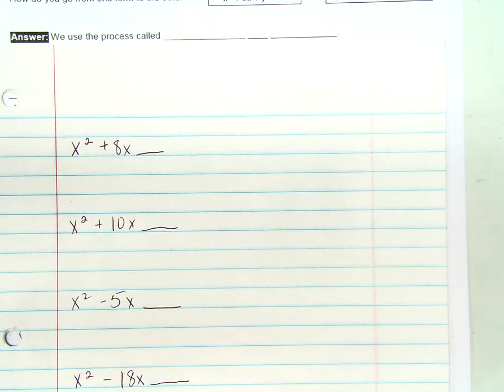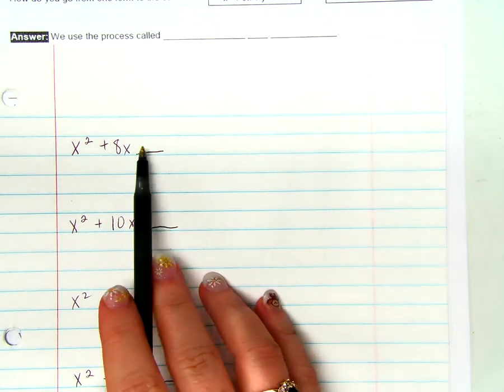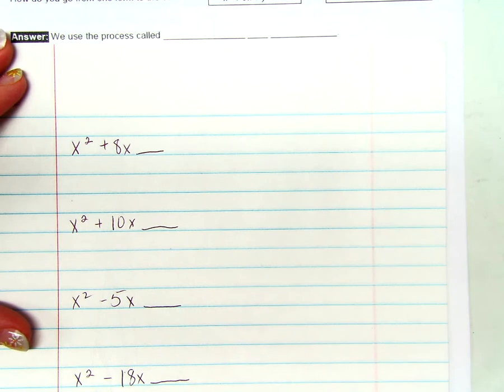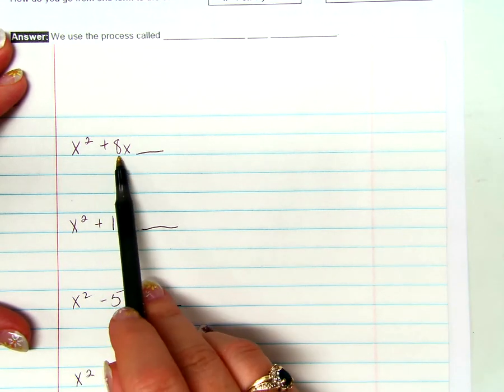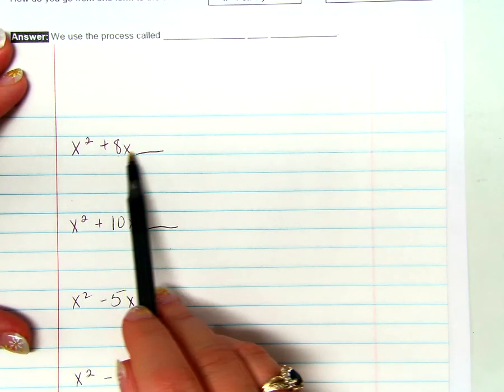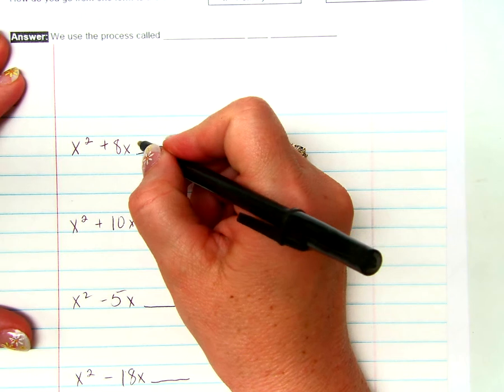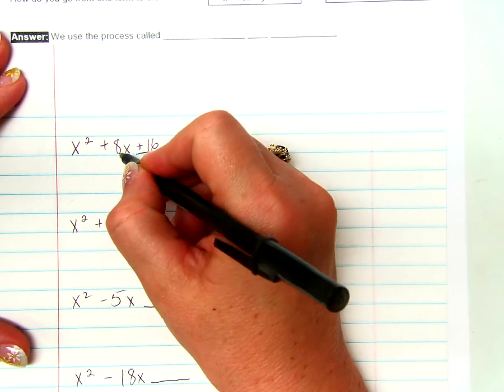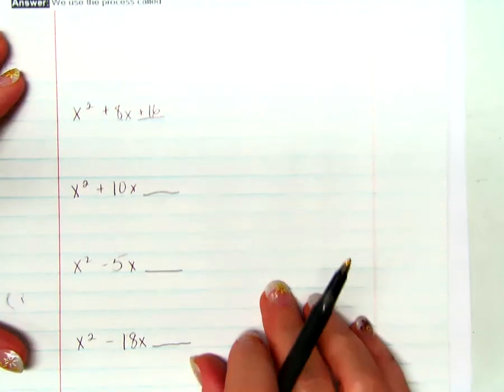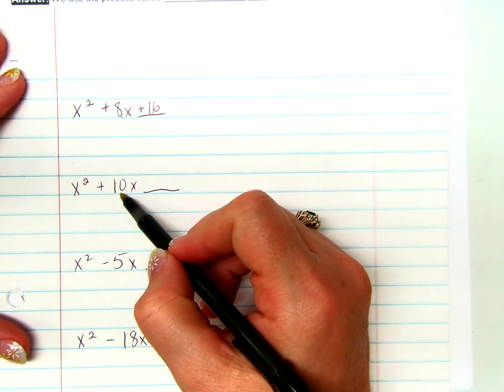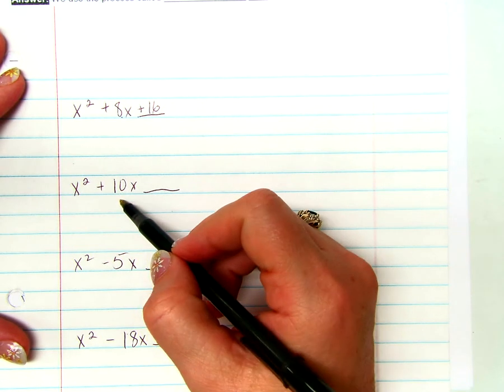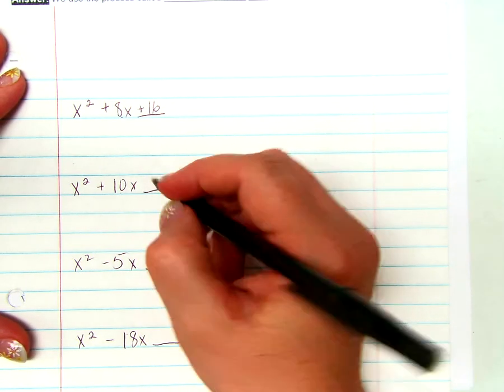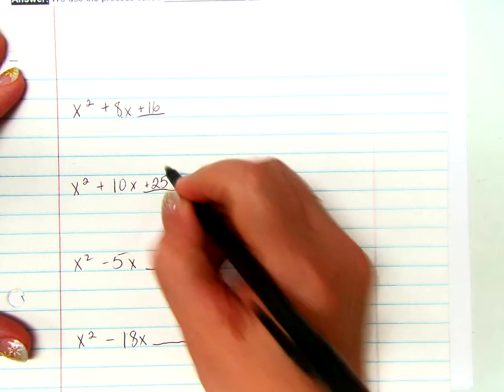Can you do it without the algebra tiles? How do we fill in this blank right here? Take the middle term, divide it by 2, and square it. So what goes here? Plus 16. 8 divided by 2 is 4, 4 squared is 16. What about here? 10 divided by 2 is 5, 5 squared? 25, all right?